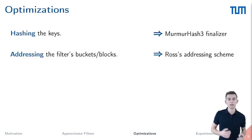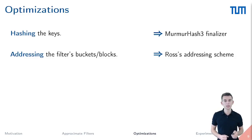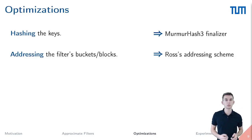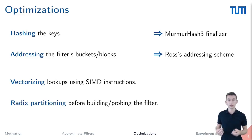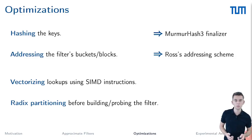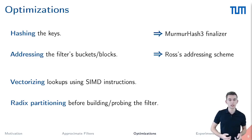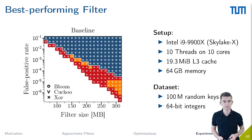We have seen different filter types and their characteristics, and now we can look into how to optimize them. In previous work, we find several optimizations that improve lookup and build performance. In particular, the hash function and the addressing of buckets and blocks can boost performance. We found that the finalizer used in the MurmurHash3 function and the addressing scheme developed by Hoss are both fast and do not affect the false positive rate. For this talk, we will focus on vectorizing the lookups and using partitioning to increase spatial locality. Since filters mostly operate with small keys, partitioning the set of keys before building and probing it pays off and reduces the number of cache misses manifold.